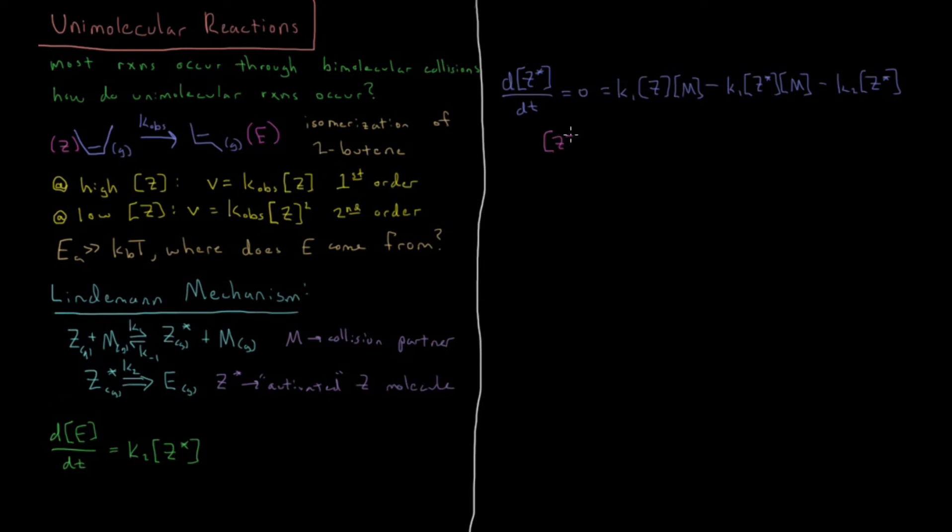We need to algebraically solve for Z star. If you solve that algebra, that will come out to be K1 times Z times M divided by K2 plus K-1 times concentration of M. Let me also note that by the steady state approximation, the concentration change of E over time is equal to the minus concentration change of Z over time. This is true via steady state approximation.